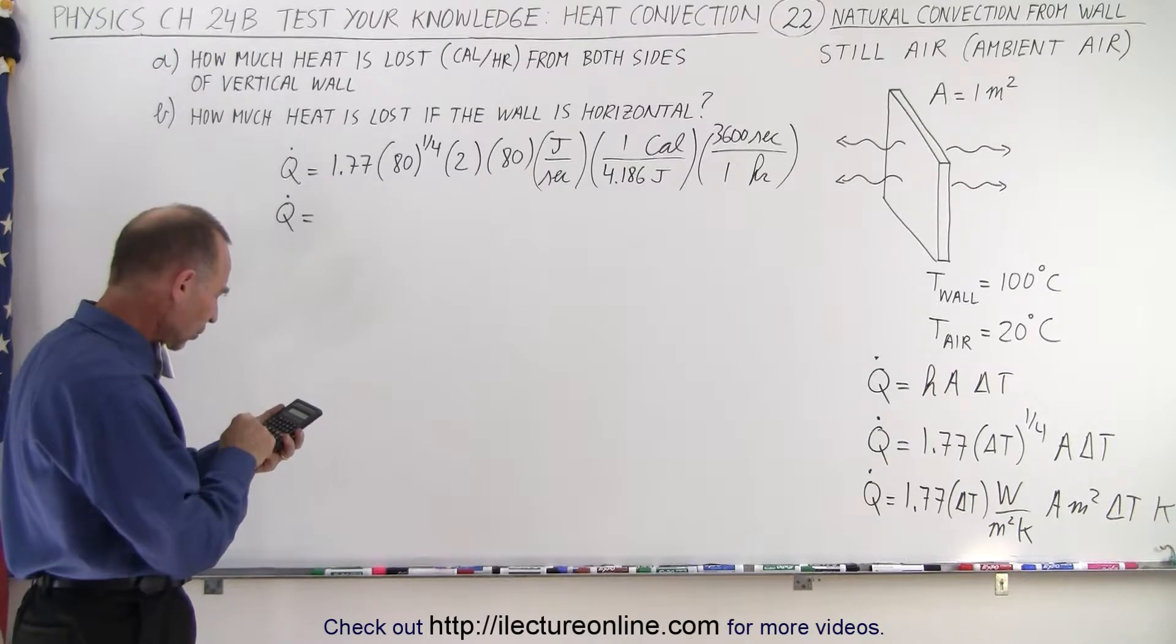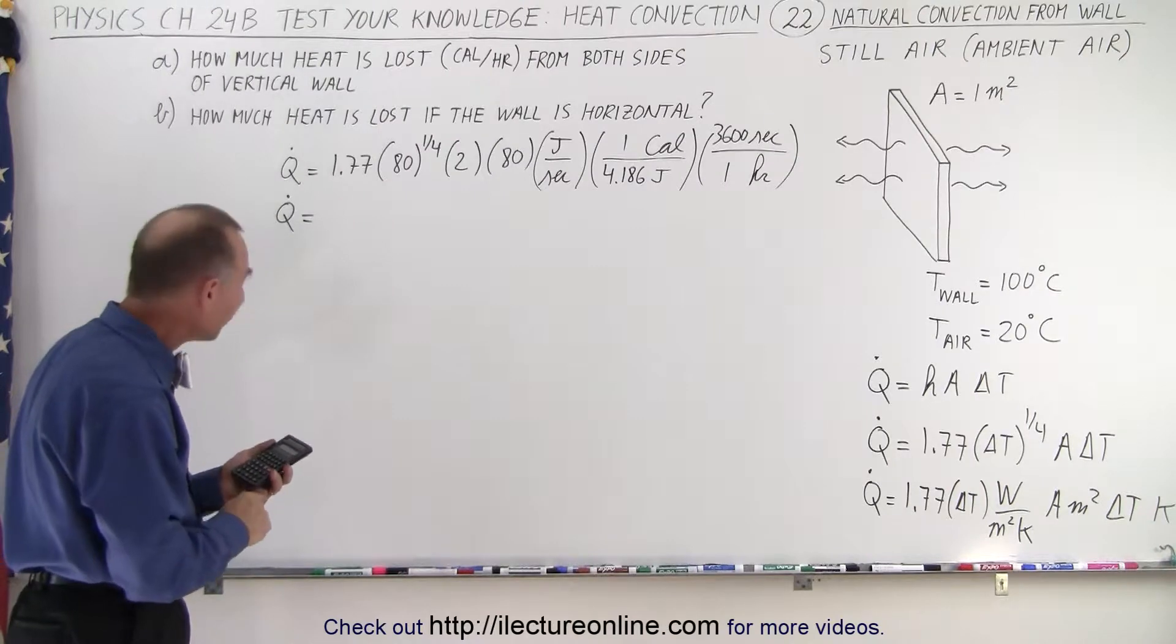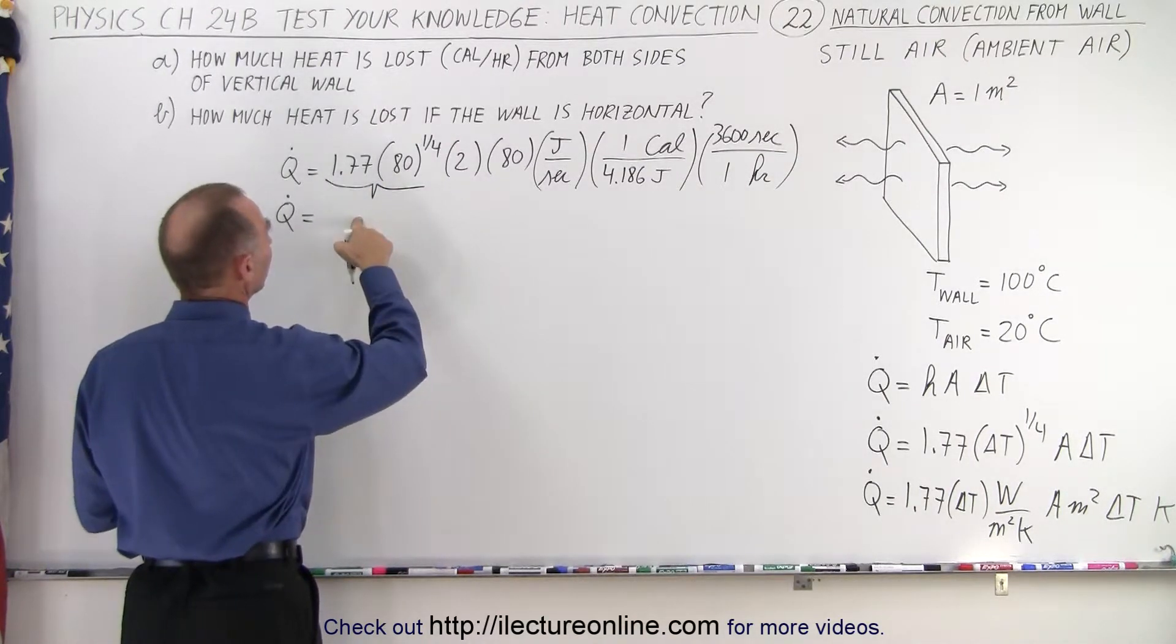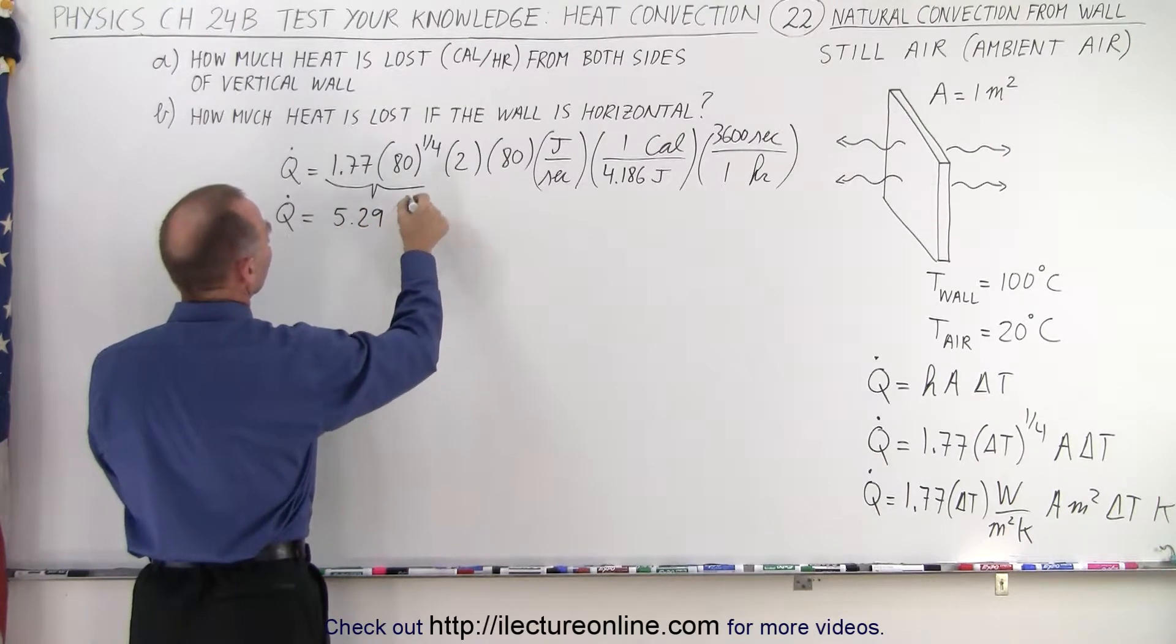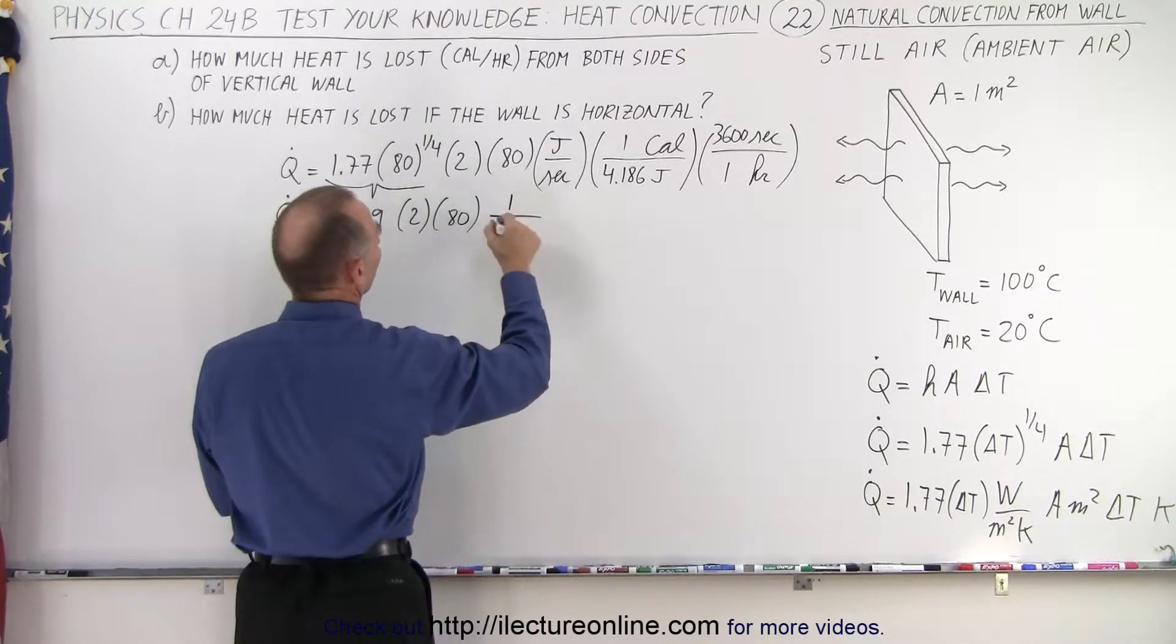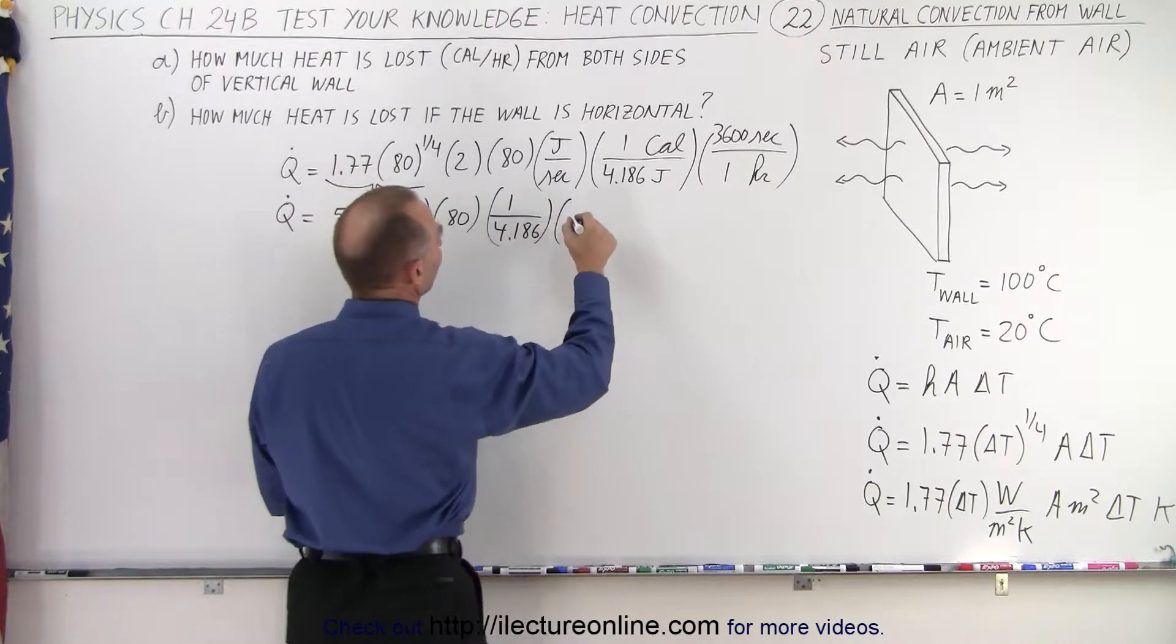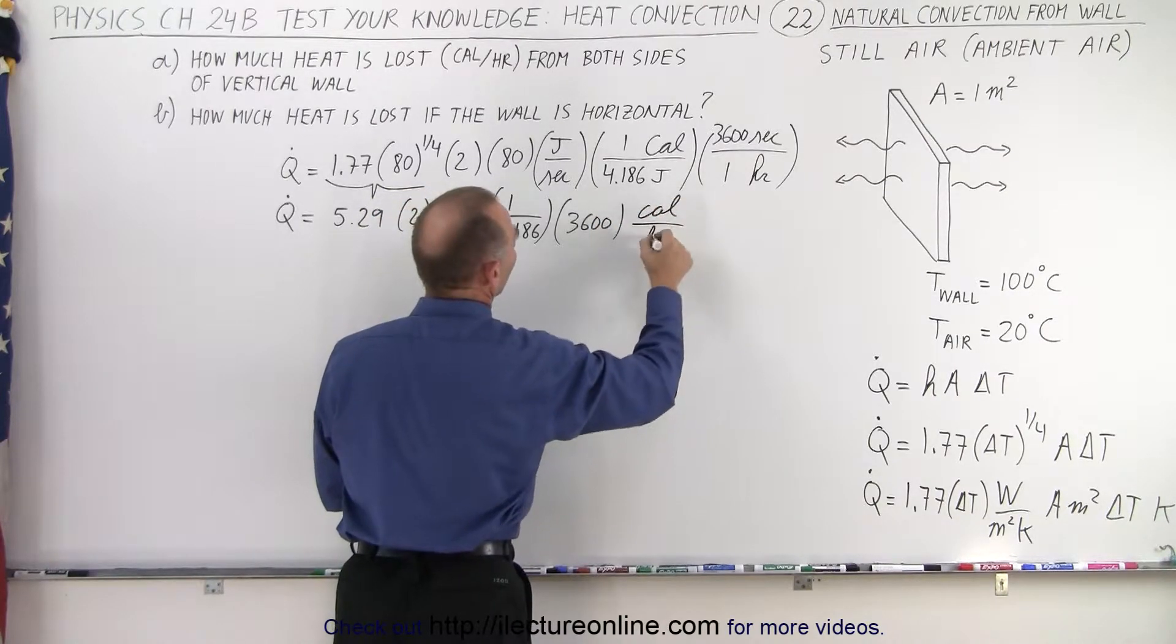So first of all, 80 to the one-quarter power, 0.25, times 1.77, that'll give us 5.29. So H here, the transmission coefficient, is going to be 5.29, times 2, times 80, times 1 over 4.186, and then multiply it times 3600. And that'll be in terms of calories per hour.